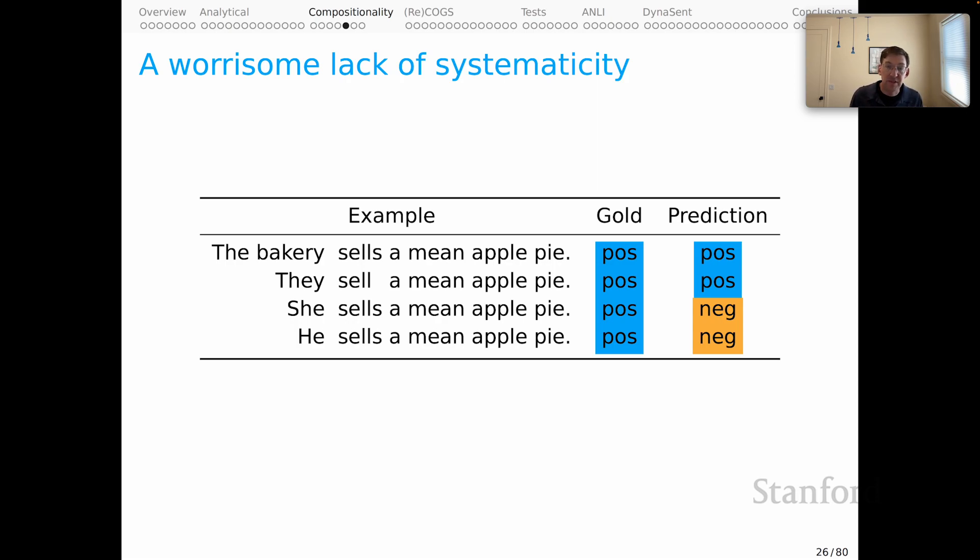And I was encouraged that the gold label and the predicted label aligned here. Similarly, for they sell a mean apple pie, I was happy to see this alignment. And I started to think that my model truly understand this very specialized sense of the adjective mean. But that kind of fell apart with the next two examples. She sells a mean apple pie. He sells a mean apple pie. Both of those were predicted negative,